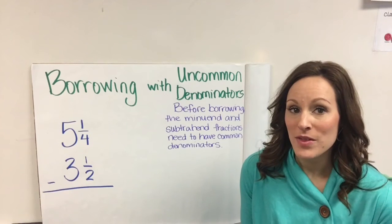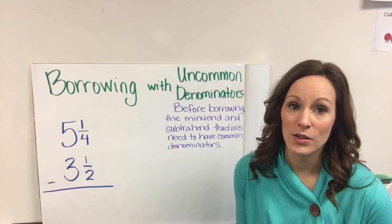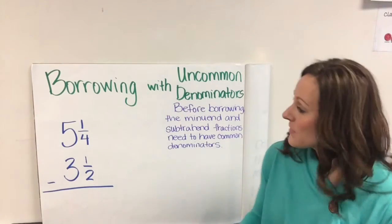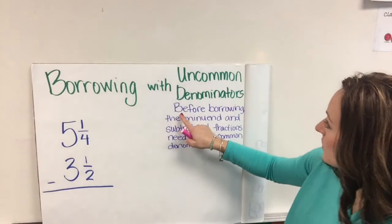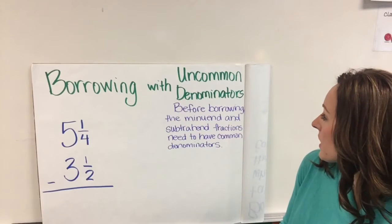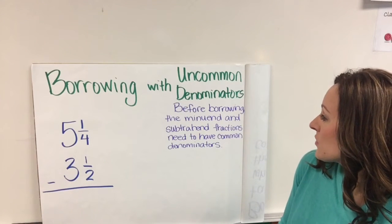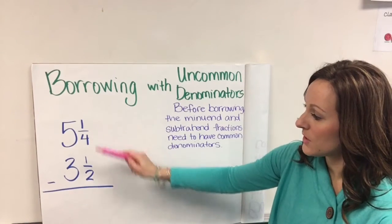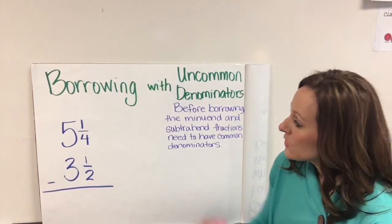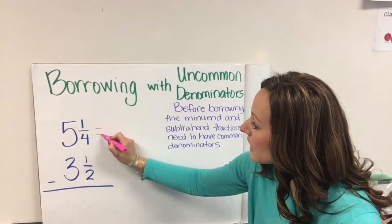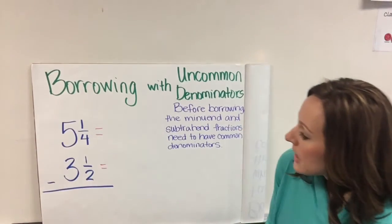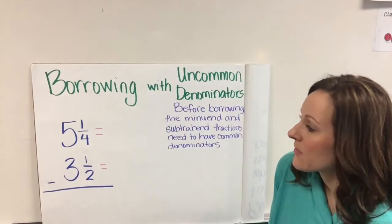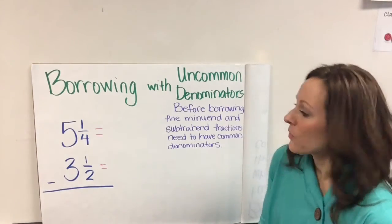To help you out with this, I'm going to use a couple of different colors to show you each step so that you can simplify it in your minds. The first step we need to do, which I have listed here, is before borrowing, the minuend and the subtrahend fractions need to have common denominators. So what I'm going to do is write an equal sign right here and we're going to create common denominators so we have a subtraction problem that we can work with.